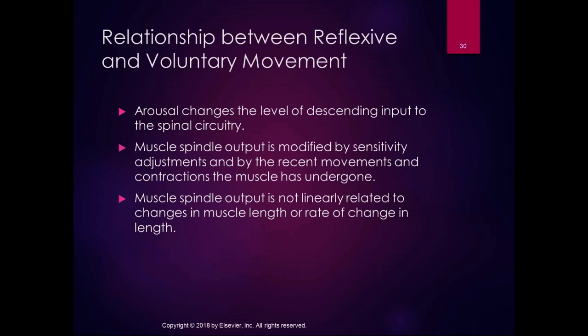Regarding the relationship between reflexive and voluntary movement, arousal changes the level of descending input to the spinal circuitry. Muscle spindle output is modified by sensitivity adjustments and recent movements and contractions the muscle has undergone. Muscle spindle output is not linearly related to changes in muscle length or the rate of change of length — there's a lot of other input that goes into it.